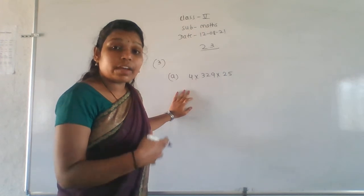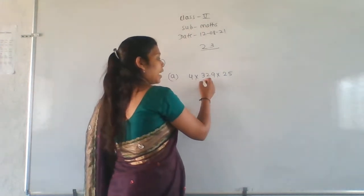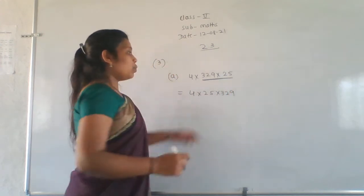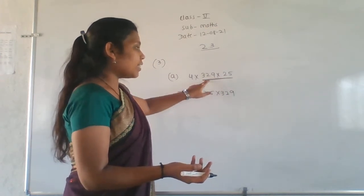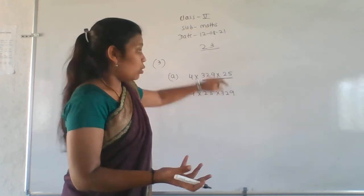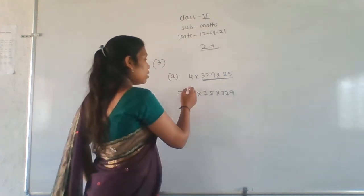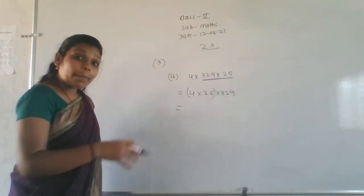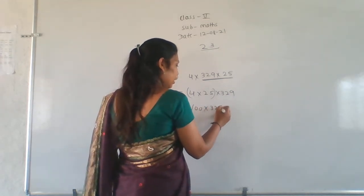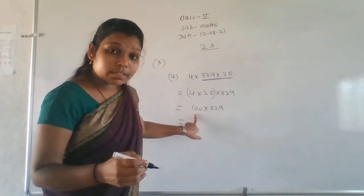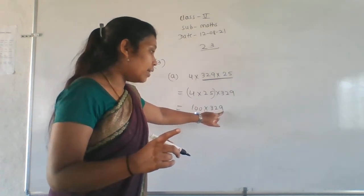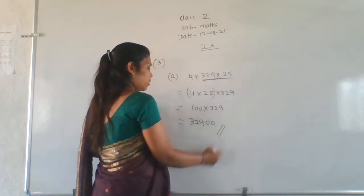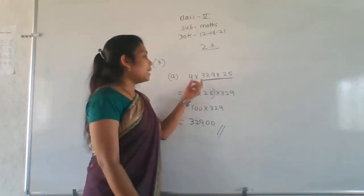Here we have 4 into 329 into 25. We have to make a group, and after that do the multiplication. So I just exchange these two numbers — that will be 4 into 25 into 329. Just exchange the two numbers; write 25 first, then 329. Both give the same result. We are making a group here. Whenever we have zeros, we just multiply the one value: 329 into 1 is 329.